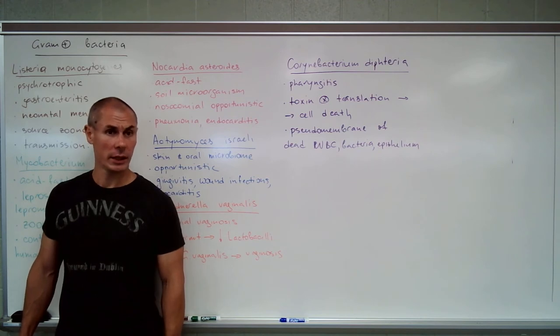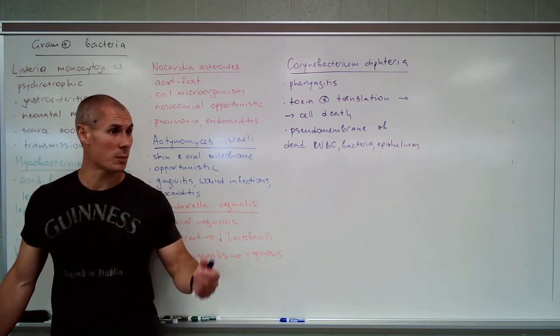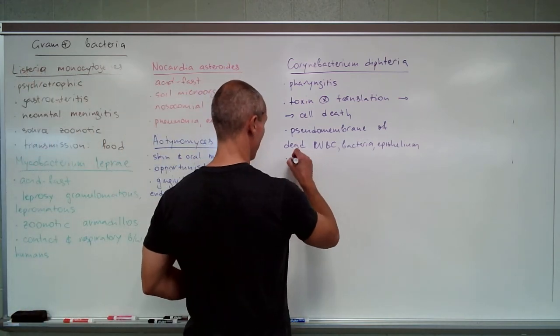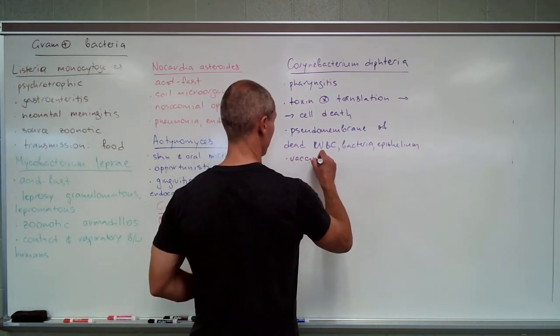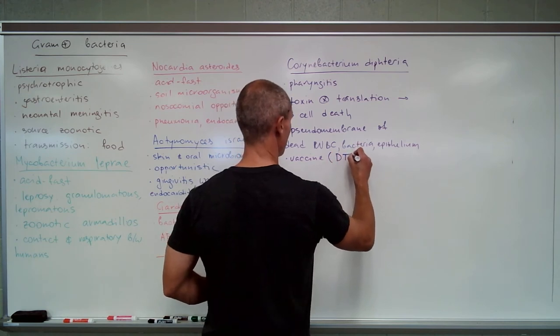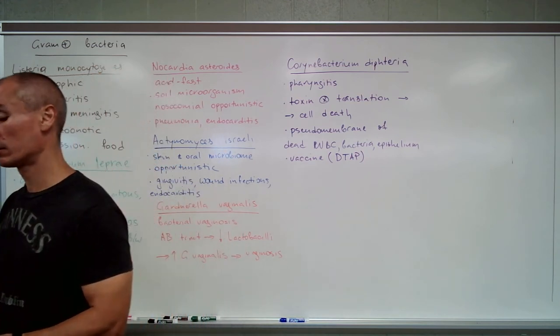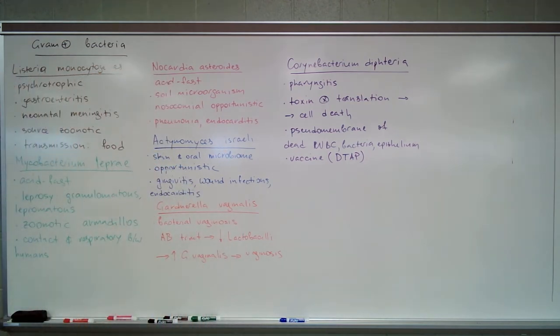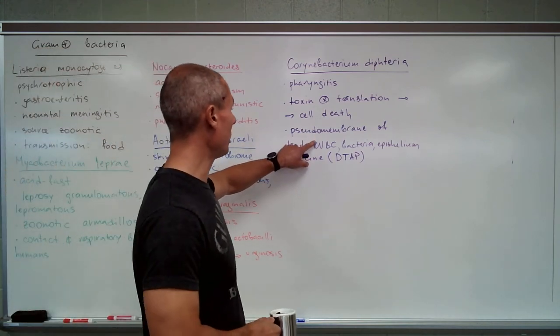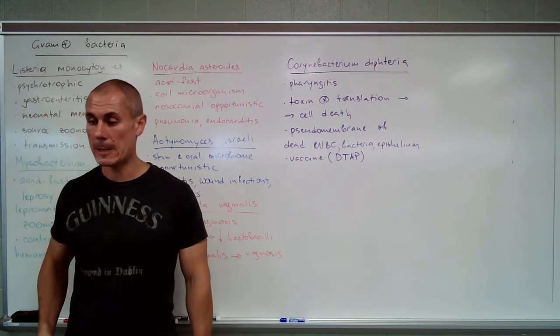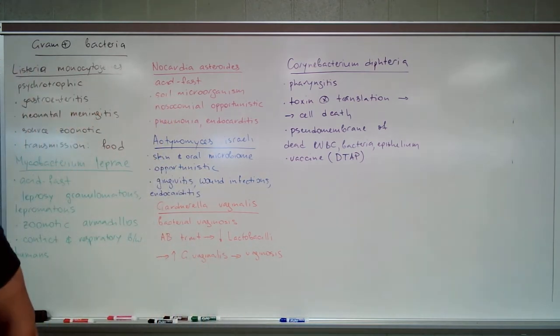This is a very contagious disease with R0, if I remember correctly, like 10 to 12. It's rivaled by measles probably only. But good news, it is vaccine preventable. So D in DTAP is for diphtheria.